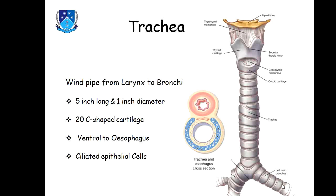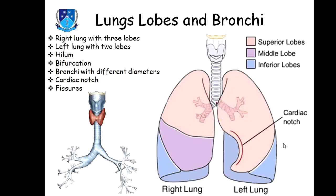Ciliated cells are present in the trachea as well as in the bronchi. The trachea bifurcates and divides into two bronchi: the right bronchus and the left bronchus. This point of bifurcation is called the carina.